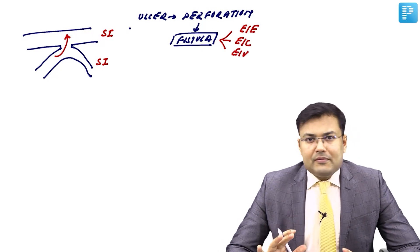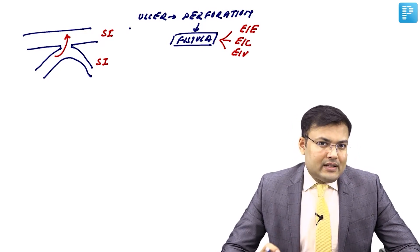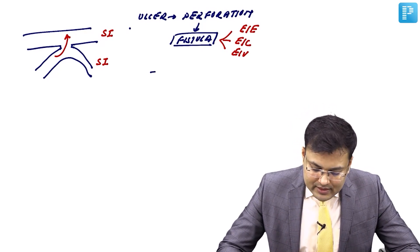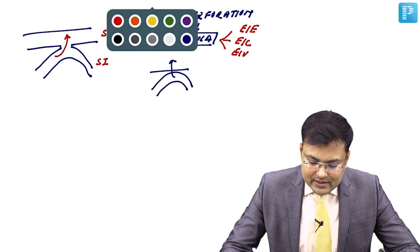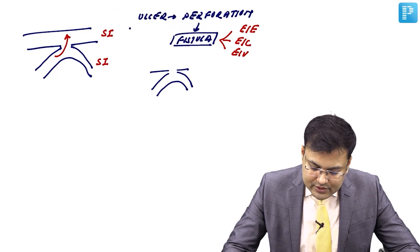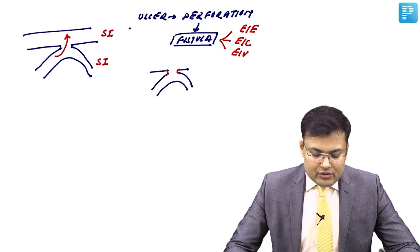Whenever we perform laparotomy, sometimes at the site of laparotomy there is a bowel loop. If there is ulceration and perforation at that site, an enterocutaneous fistula forms between the bowel and the skin at the laparotomy site.